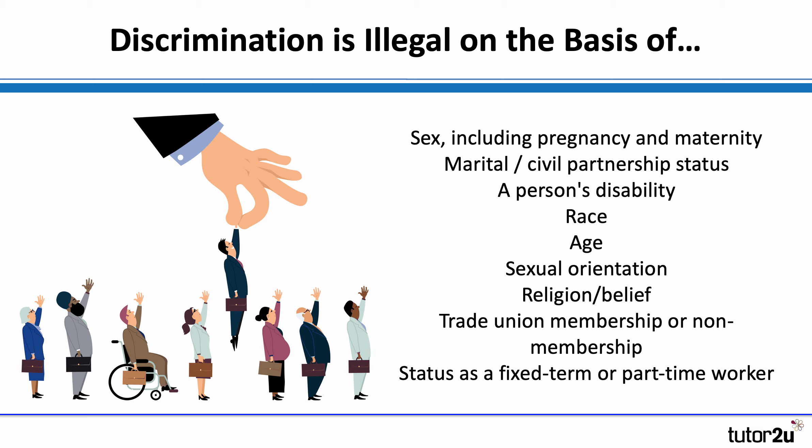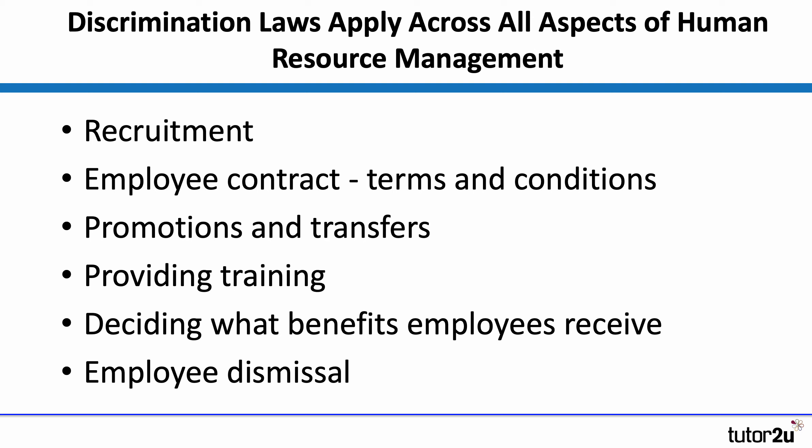Another key area is discrimination. From the business's point of view, they're not allowed to discriminate against employees on the basis of any of the features listed on the slide — for example, not allowed to discriminate based on race, age, sexual orientation, or trade union membership or non-membership. The laws relating to discrimination affect a wide range of human resource management activities. So it's not just recruitment, but the terms of the employee's contract, ongoing activities within the business, the training that's provided, who gets promoted, who is transferred within the business, and similarly, who is dismissed. It's a particularly complex area that businesses need to take lots of care over.